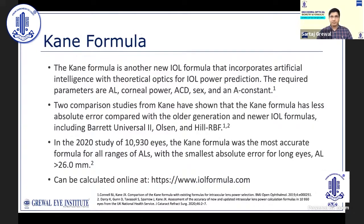Next is one of the newest formulas available, the Kane formula, which combines artificial intelligence and theoretical optics for IOL power prediction. It requires the input of axial length, keratometry values, anterior chamber depth measurements, and the patient's gender. Two very recently published studies, including one involving almost 11,000 eyes, showed the Kane formula to be more accurate than the Barrett Universal II, the Olsen, and the Hill RBF. However, currently it is only available as an online tool.